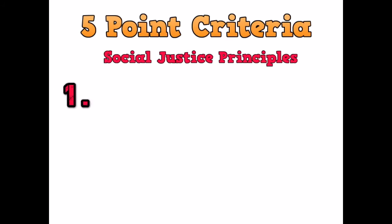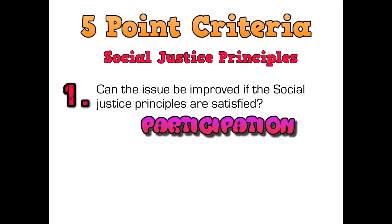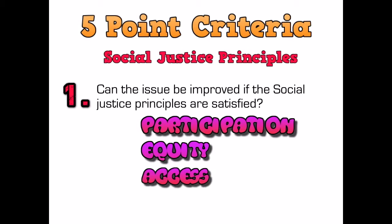The first part in the five-point criteria is social justice. Social justice principles include participation, equity, access, and rights. These are particularly important because social justice means that the rights of all people in our community are considered in a fair and equitable manner — it's all about fairness.